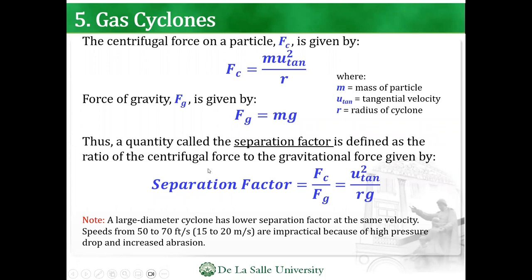The centrifugal force on a particle is given by M times u_tan squared over R, where u_tan is the tangential velocity, R is the radius of the cyclone, and M is the mass of the particle. The force of gravity is mg. Thus, a quantity called the separation factor is defined by the ratio of those two. A large diameter cyclone has a lower separation factor at the same velocity. Speeds from 50 to 70 feet per second (15 to 20 meters per second) are impractical because of high pressure drop and increased abrasion.